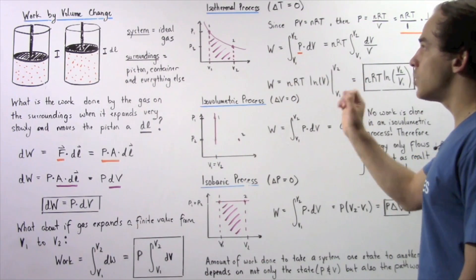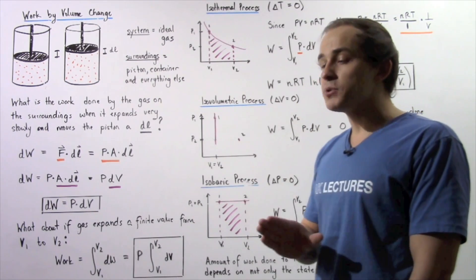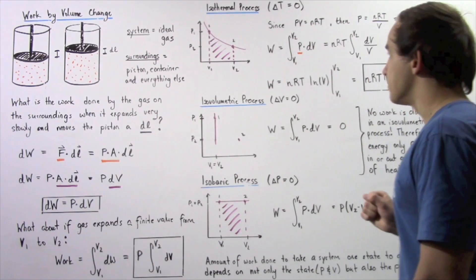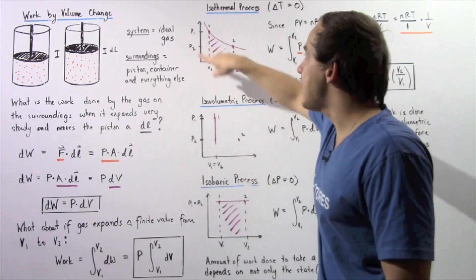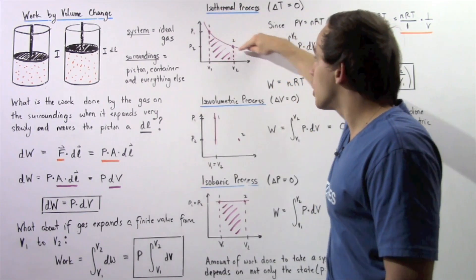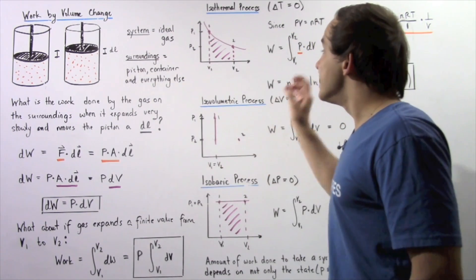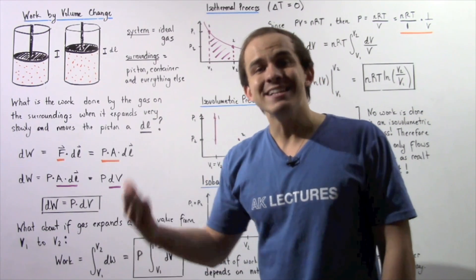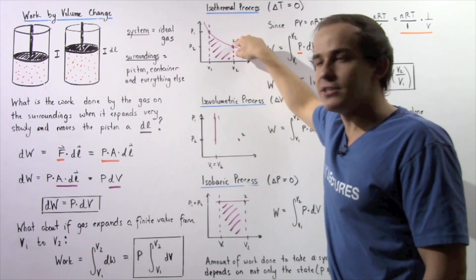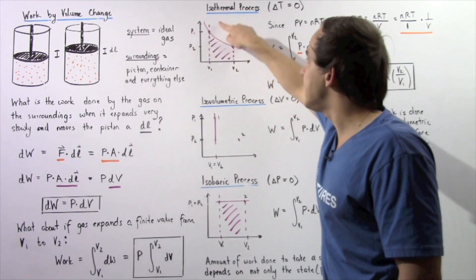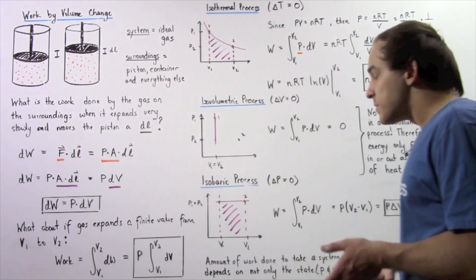An isothermal process is a thermodynamic process in which the change in temperature is zero — temperature remains constant. If we plot this on the PV plane, with volume on the x-axis and pressure on the y-axis, we get the following curve. Suppose we begin at point one and end at point two. To calculate the work done, we integrate the curve and find the area underneath from point one to point two. At point one, pressure is P1 and volume is V1; at point two, pressure is P2 and volume is V2.